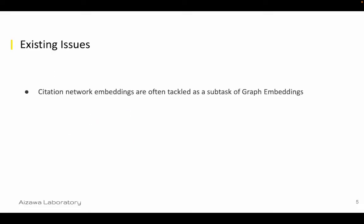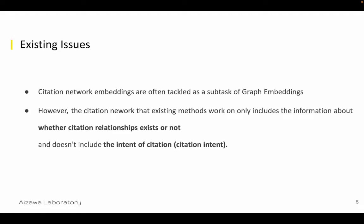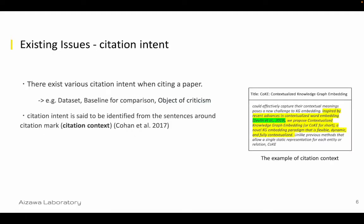This embeddings task is often tackled as a subtask of graph embeddings, but existing embeddings methods only focus on whether citation relationships exist or not, and don't focus on the purpose of why the citation was made. There are various intents when citing a paper, such as using it as a dataset or as the baseline of comparison. This citation intent is identified from the sentences around the citation mark, which is called citation context.